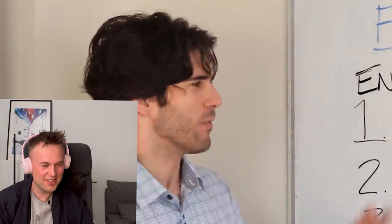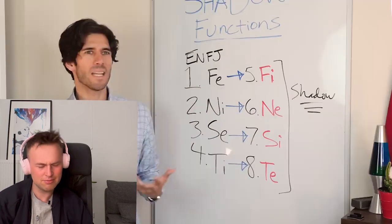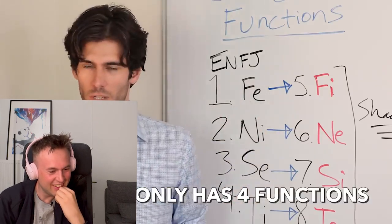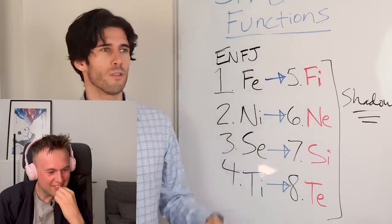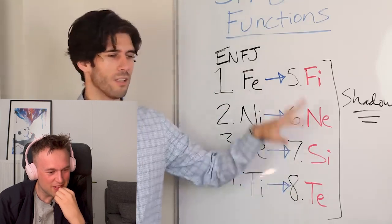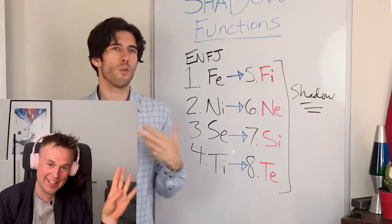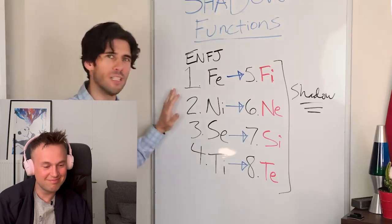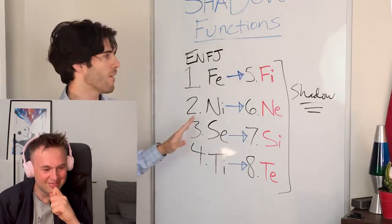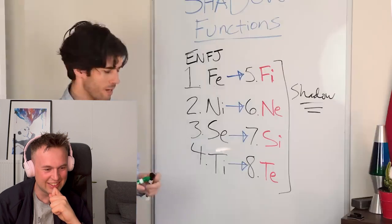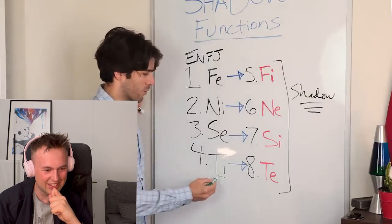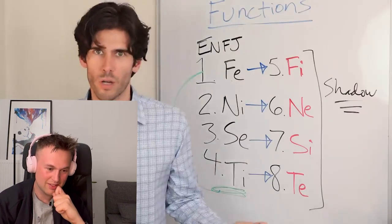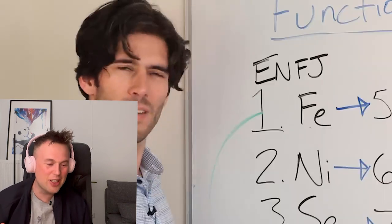So why, Frank, do you not believe in the shadow functions? Because, in my opinion, there's no reason to — everything can be explained by the first four functions. When you start to add in four more functions so that every type has every function, it starts to get complicated to the point that it really starts to feel fake. Especially when the common wisdom is that your fourth function is the weak spot, in opposition to the first one — but then it's actually both of them.